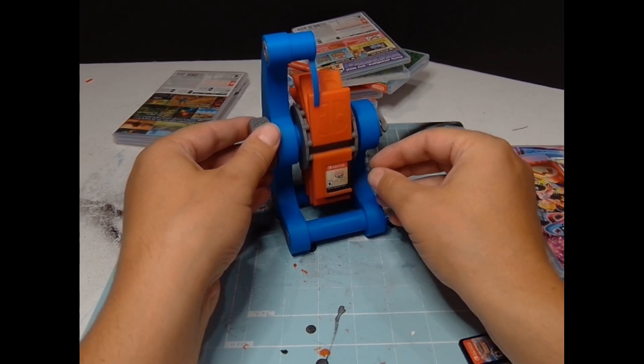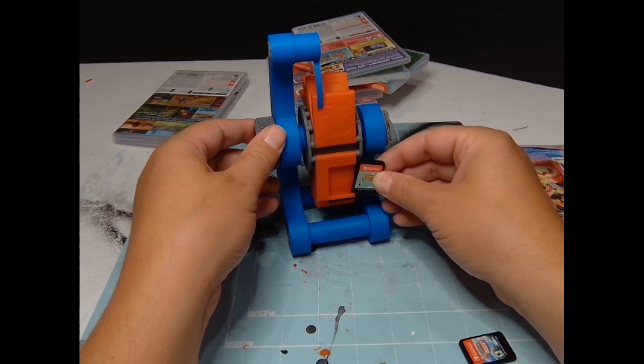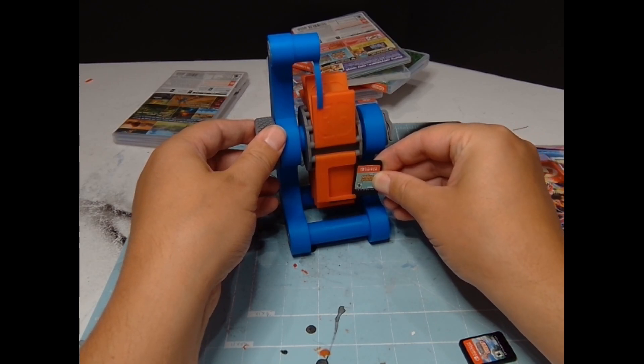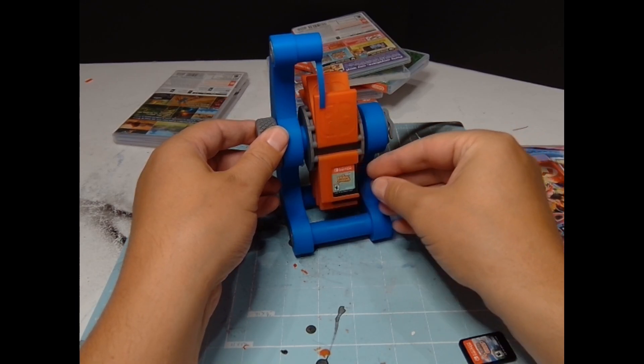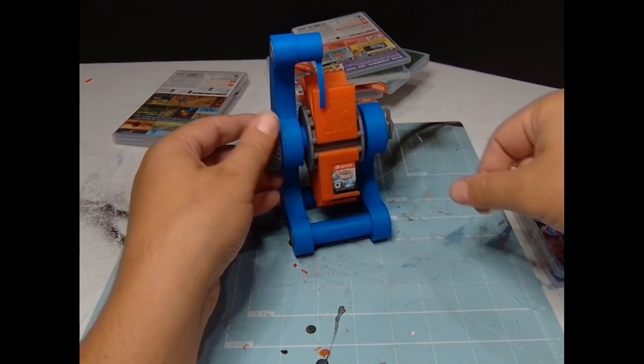But yeah, I might try TPU. So this Rolodex will hold 12 games. It doesn't take up that much space and it's actually not that bad of an idea for those that want to save space just to kind of flip through your catalog of games.